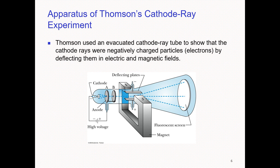This negatively charged particle was identified as the electron. This starting experiment confirmed that the cathode ray is a negatively charged particle.